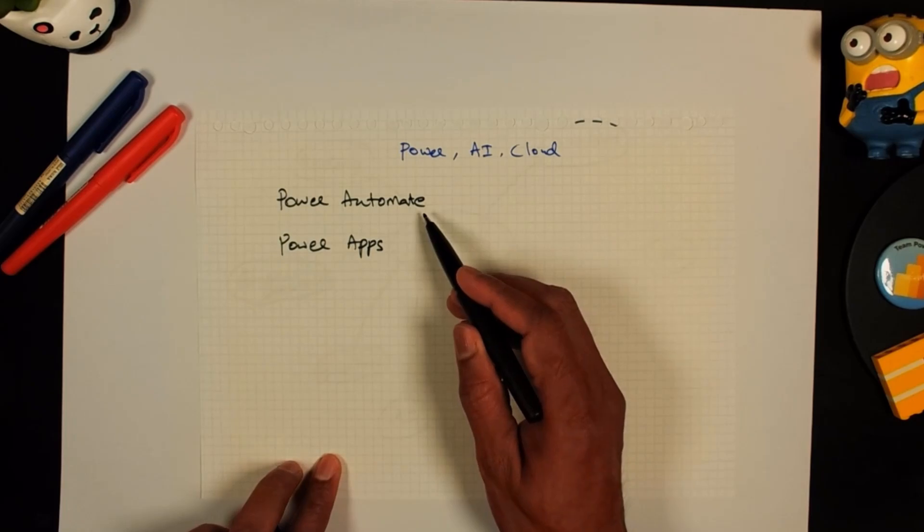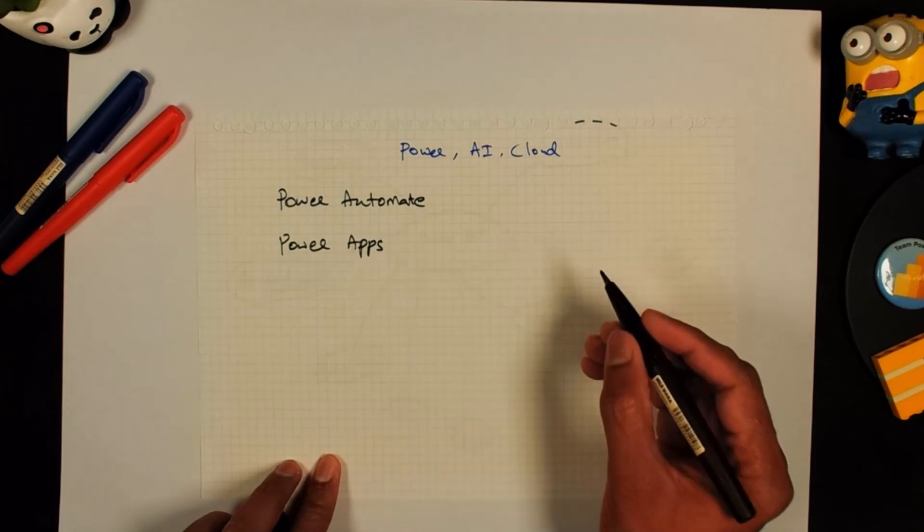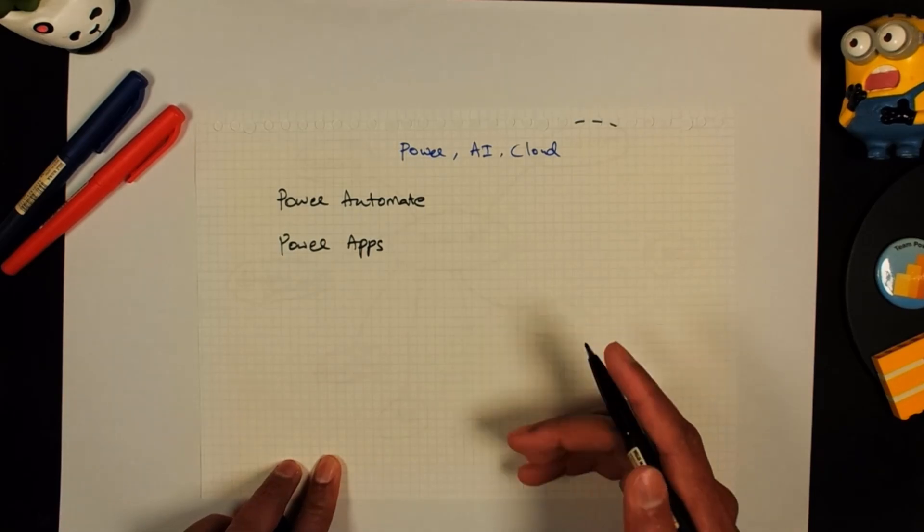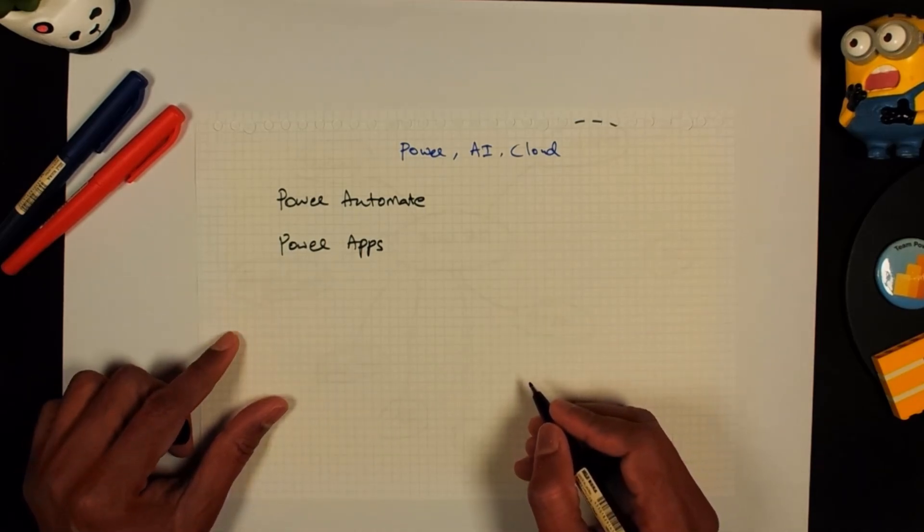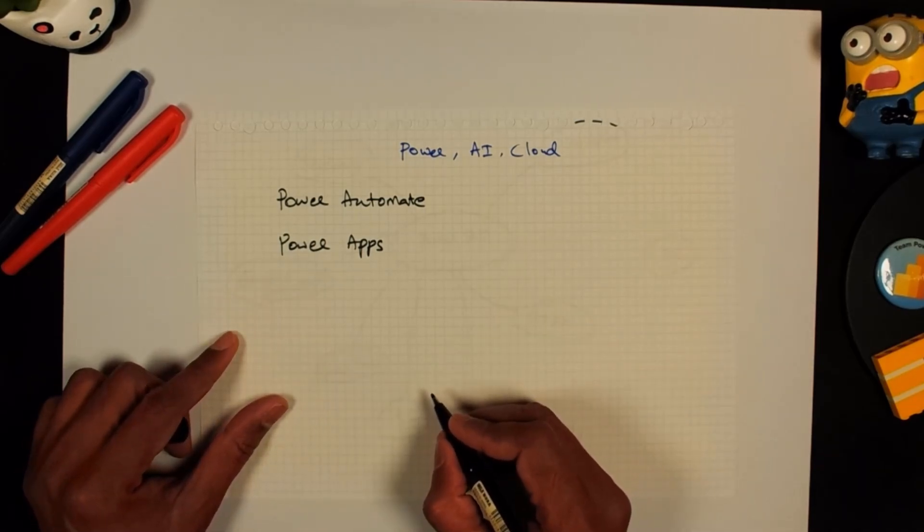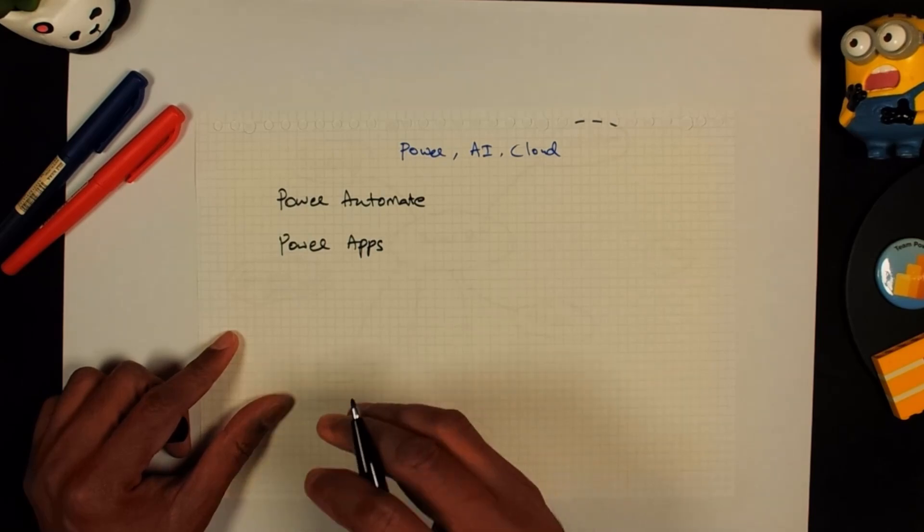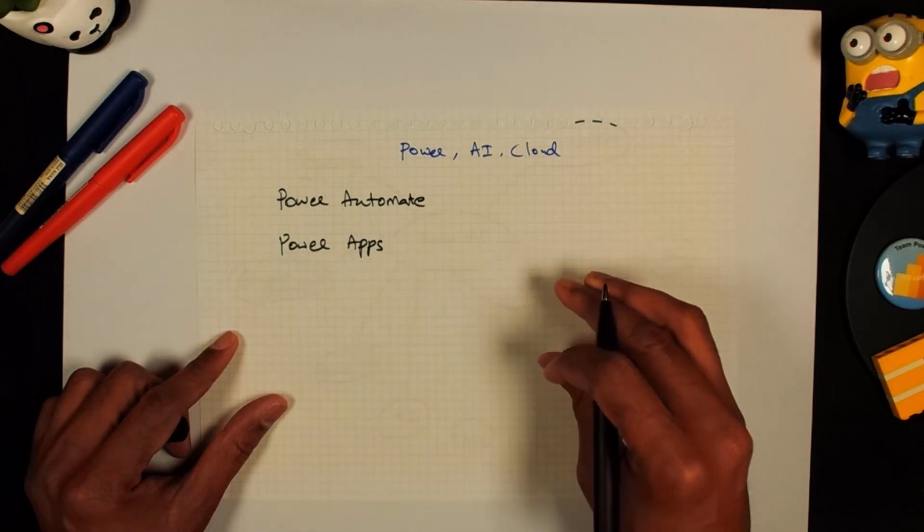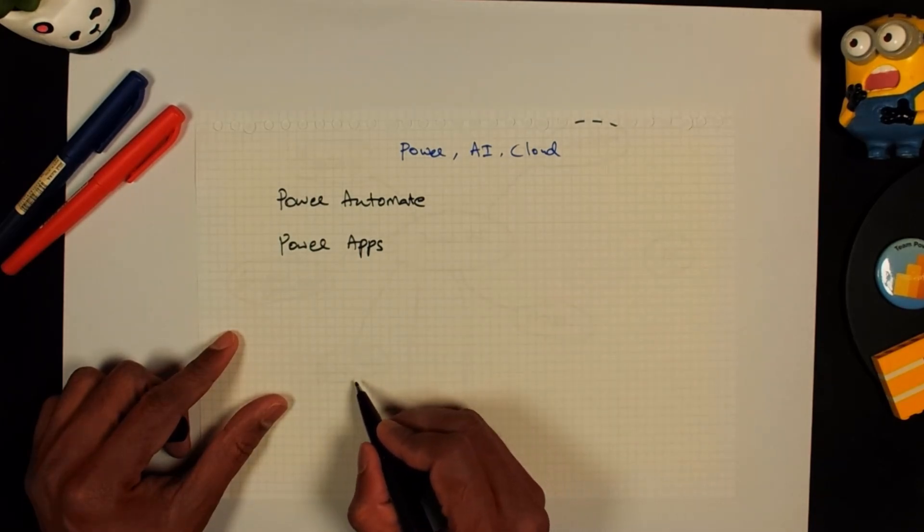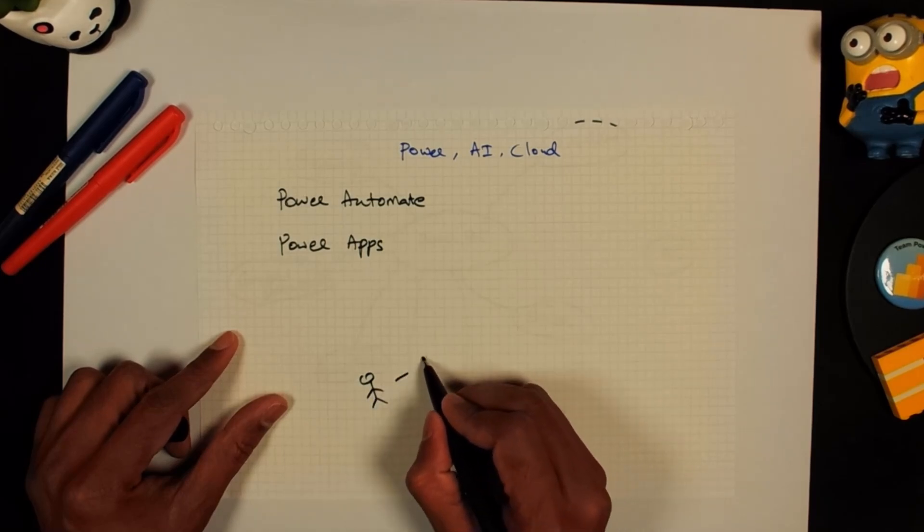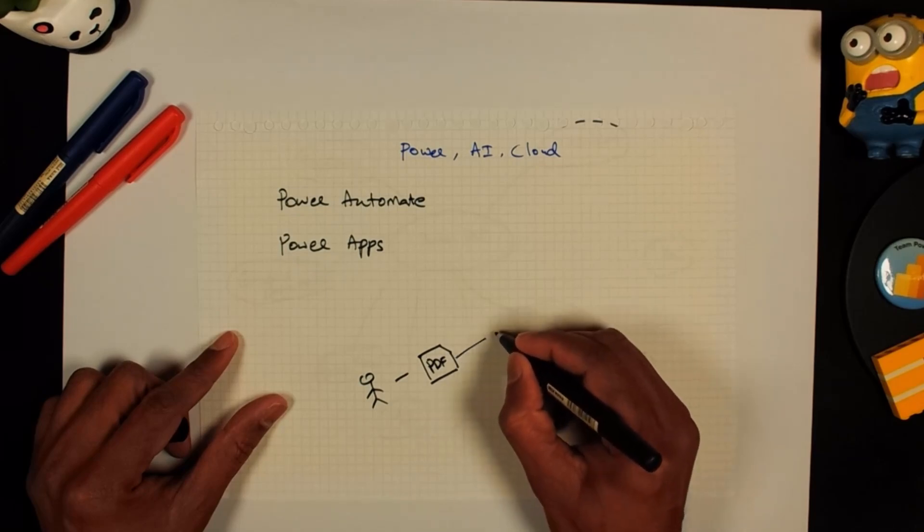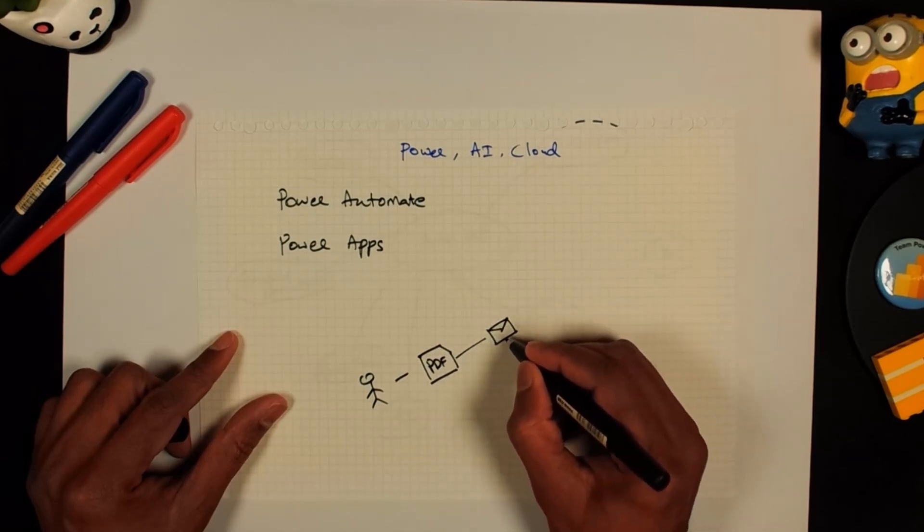What Power Automate does is it helps you build automation either at a desktop level or cloud or hybrid so that you can take some repetitive tasks and you can automate them. For example, in our chocolate company, sometimes a customer emails us a PDF order form and we would like to take that order data, extract information from the PDF and automatically put it into our ordering system. So here we have got this Stickman customer.